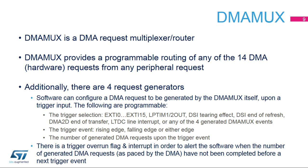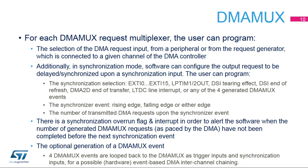Any generated DMA request is independently programmable in terms of the trigger selection, the edge detection, and the number of generated DMA requests upon each trigger event. The trigger source may be EXTI 0 to EXTI 15 or LP TIM out, DSI tearing effect, DSI end of refresh, DMA 2D end of transfer, LTDC line interrupt, or any of the four generated DMA MUX events. In synchronization mode, any DMA MUX output DMA request can be synchronized with respect to a programmed and selected synchronization input. The synchronization edge detection and the number of transmitted DMA requests upon the synchronizer event are also programmable.